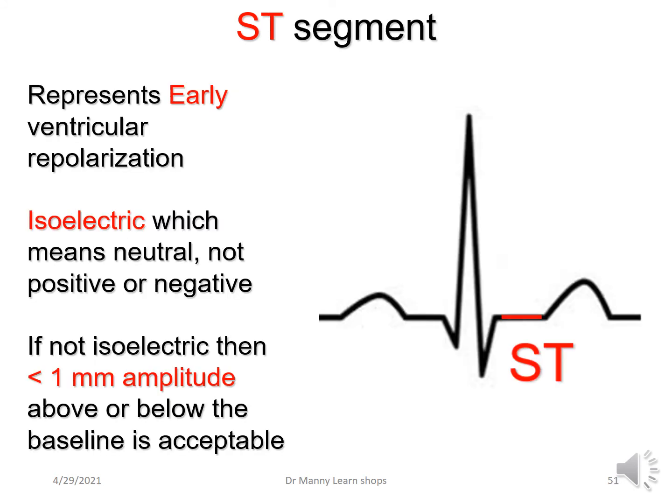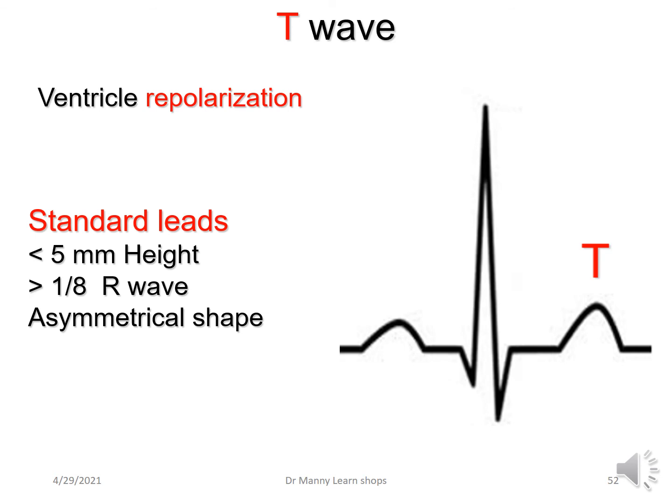The ST segment represents early ventricular repolarization and it's typically isoelectric — neutral, not positive, not negative. However, if it's not isoelectric, it's allowed to be less than 1 millimetre in amplitude above or below the isoelectric baseline. Anything more than 1 millimetre above or below is considered potentially pathological. The T-wave represents ventricular repolarization. In the standard leads, it's typically less than 5 millimetres in height but more than one-eighth of the previous R-wave, and it has an asymmetrical shape — going up slowly then down a little bit faster. In the precordial leads — V1, V2, V3, V4, V5, V6 — it's typically double, but we'll look at that in the advanced ECG LearnShops.